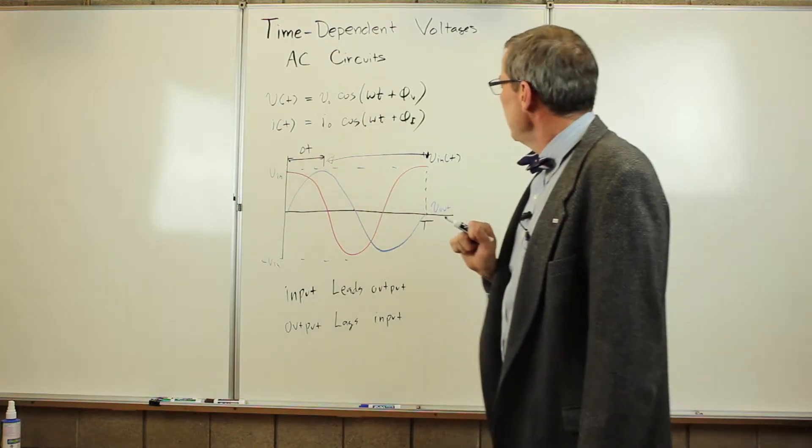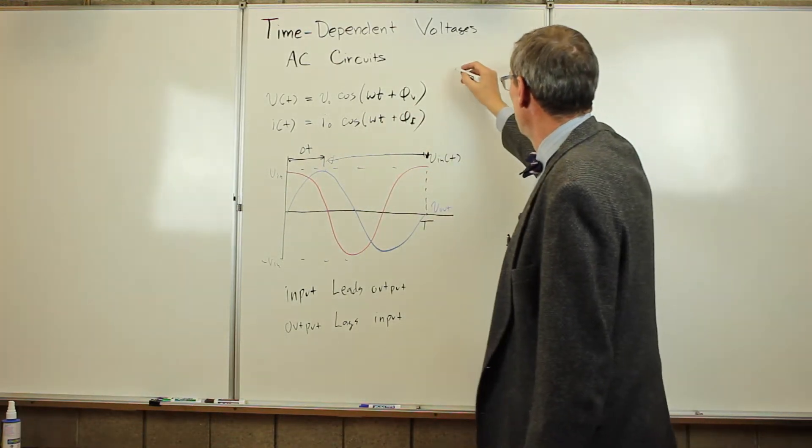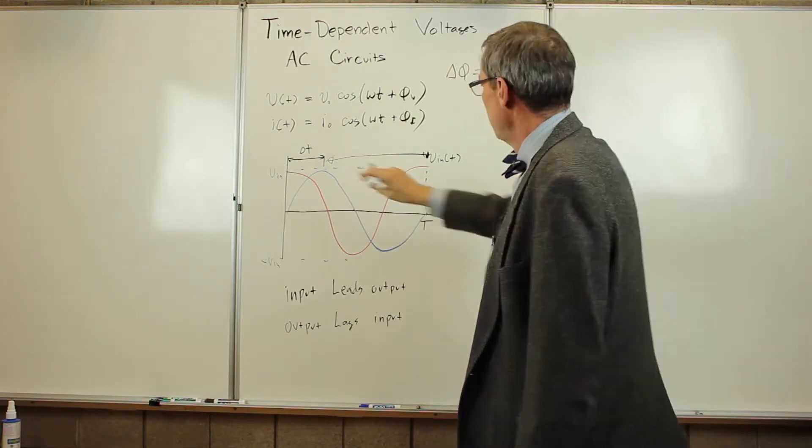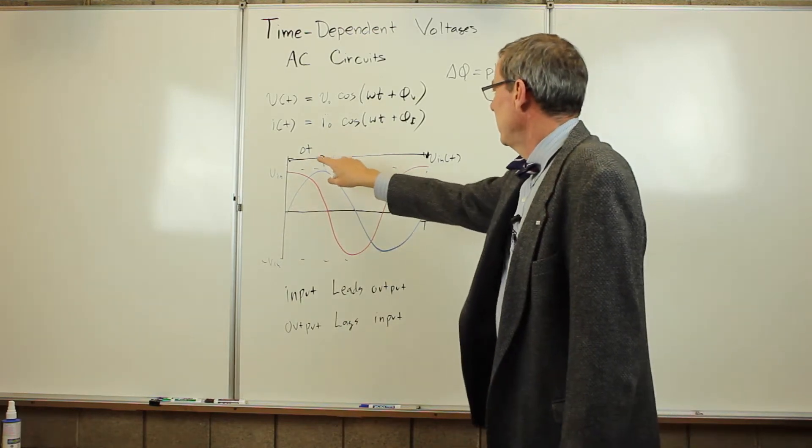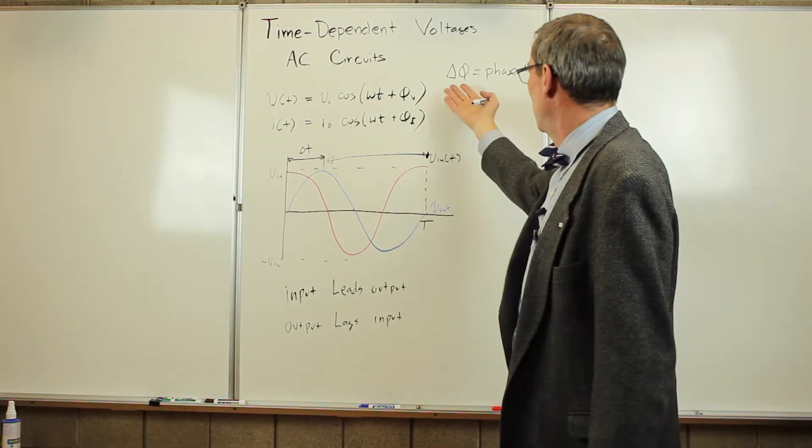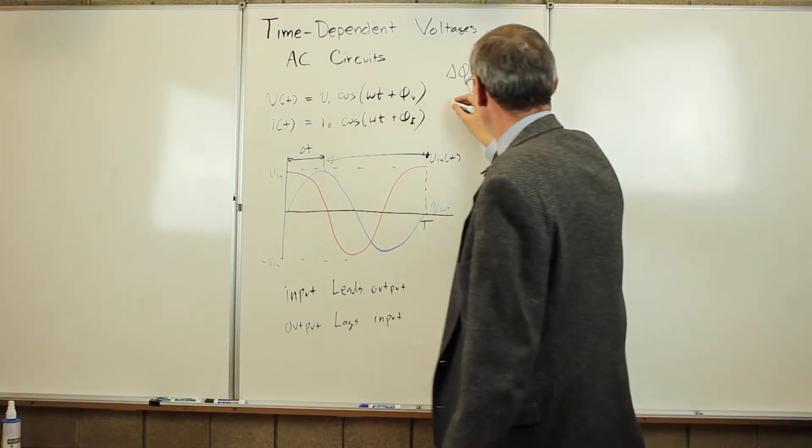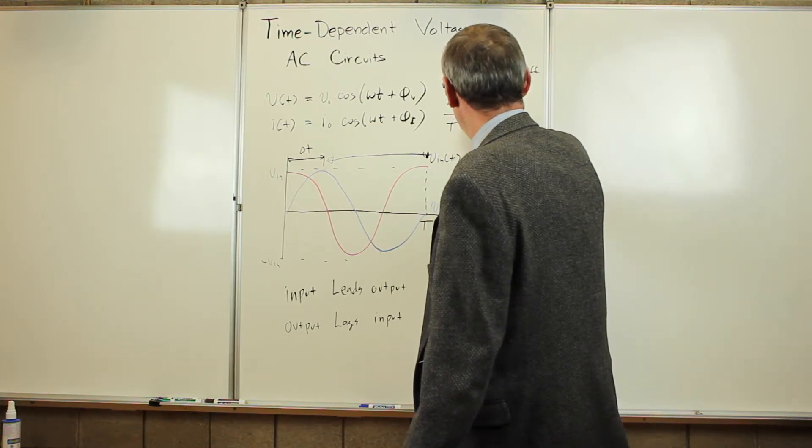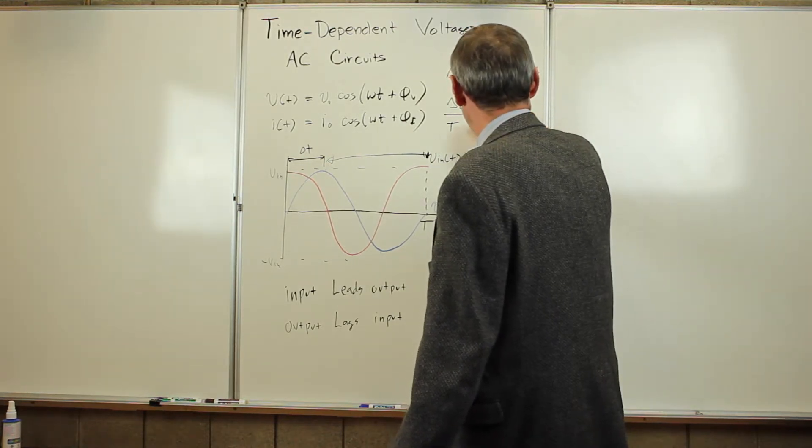And that delta t we'd like to convert into a phase difference. So there is some phase difference, delta phi, which is related to that delta t. It's basically delta t over the period, which is the fraction of the 360 degree phase difference that we could have. So delta t over the period times 360 degrees is the phase difference.